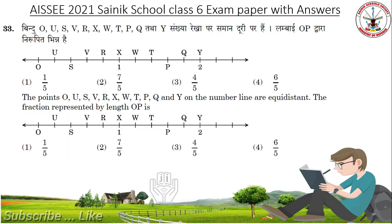The points O, U, S, V, R, X, W, T, P, Q and Y on the number line are equidistant. The fraction represented by the length of P. Check the diagram. Answer is 4 by 5.